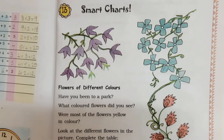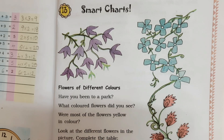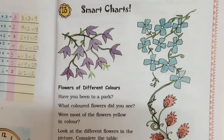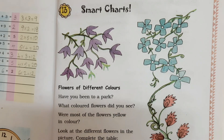Have you been to a park? You have to go to a park. What colored flowers did you see? What colors did you see? Were most of the flowers yellow? You can see the flowers in different colors. Look at the different flowers in the picture. Complete the table. You can see the flowers in this picture — complete the table.